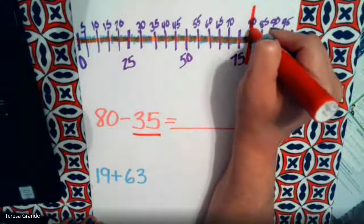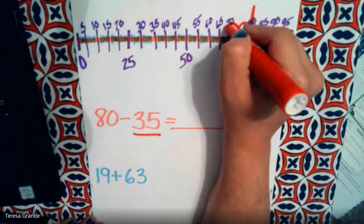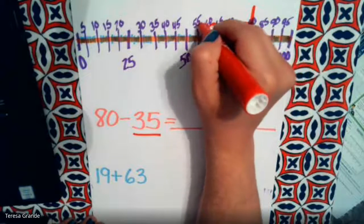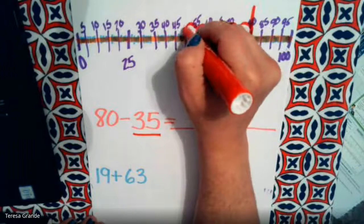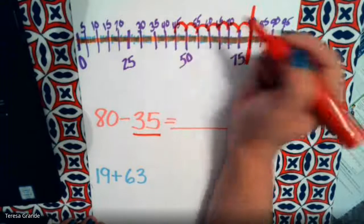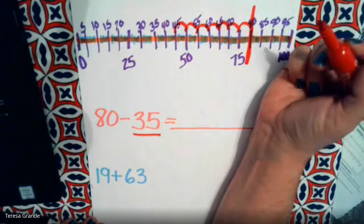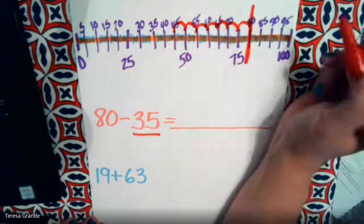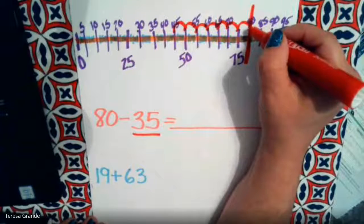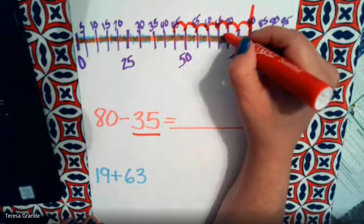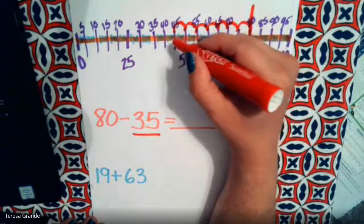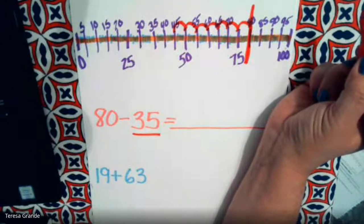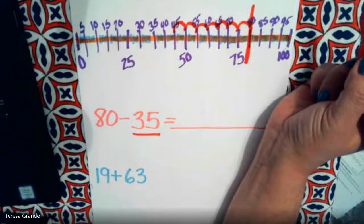So we need to go 5, 10, 15, 20, 25, 30, 35. 80 minus 35. So it's 5, 10, 15, 20, 25, 30, 35.